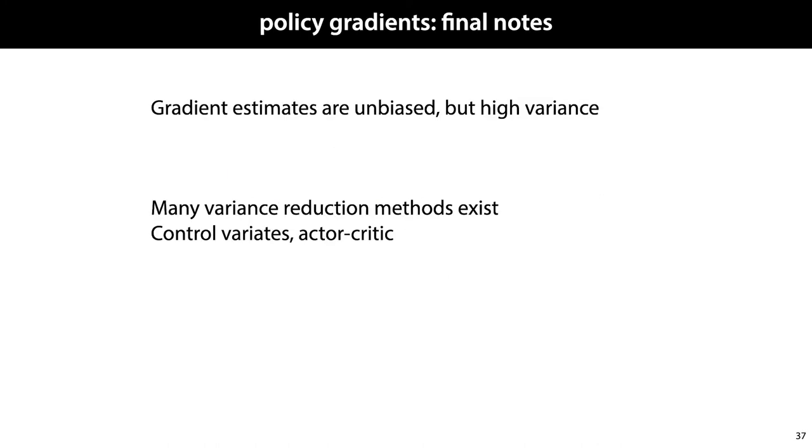Two final things to note. A very good property of policy gradients is that the gradient estimates that we get are unbiased. If we sample enough of them, we can be sure that we converge to the correct gradient. But unfortunately, the variance of our estimate is usually very high. There are many methods to reduce the variance, with names such as control variates or actor critic, and these are usually necessary to employ if you want to apply policy gradients in any realistic setting.